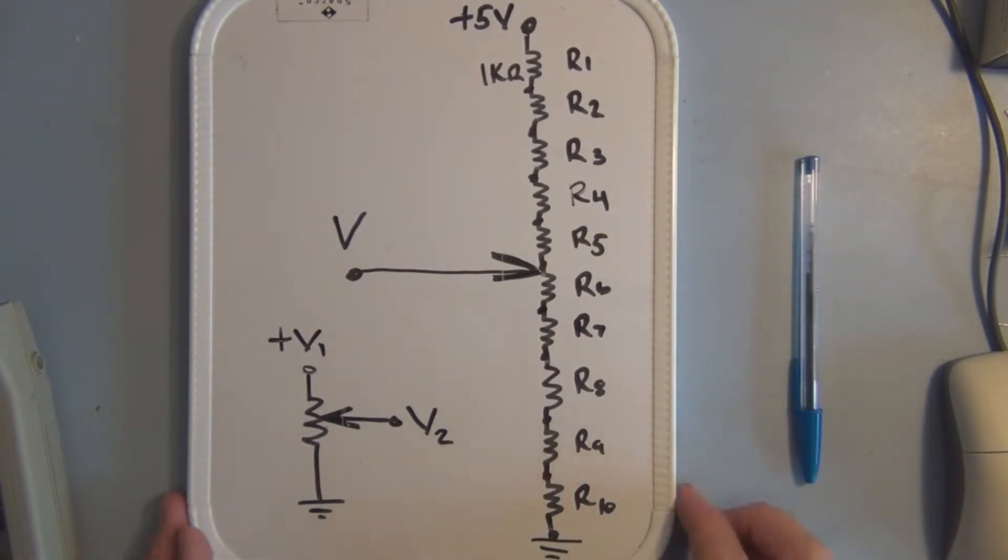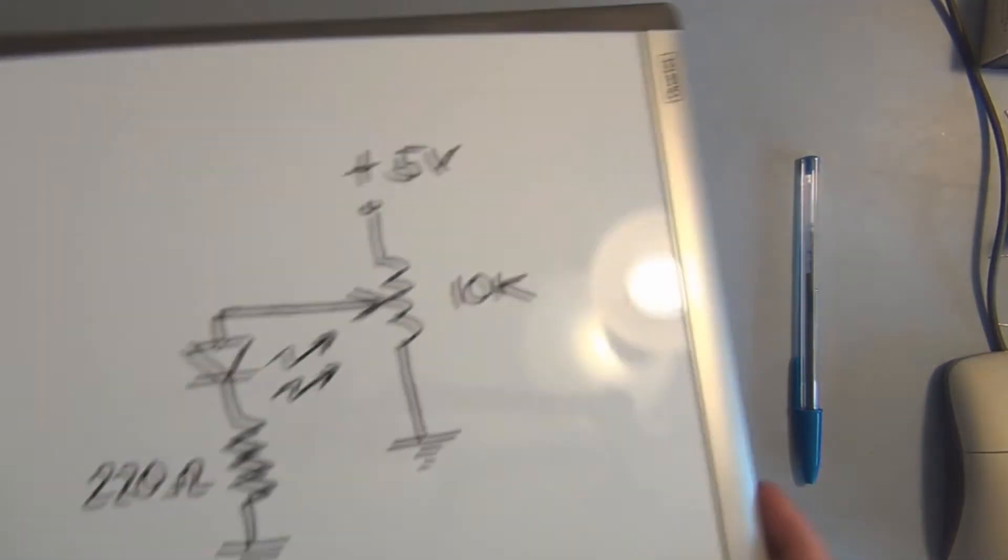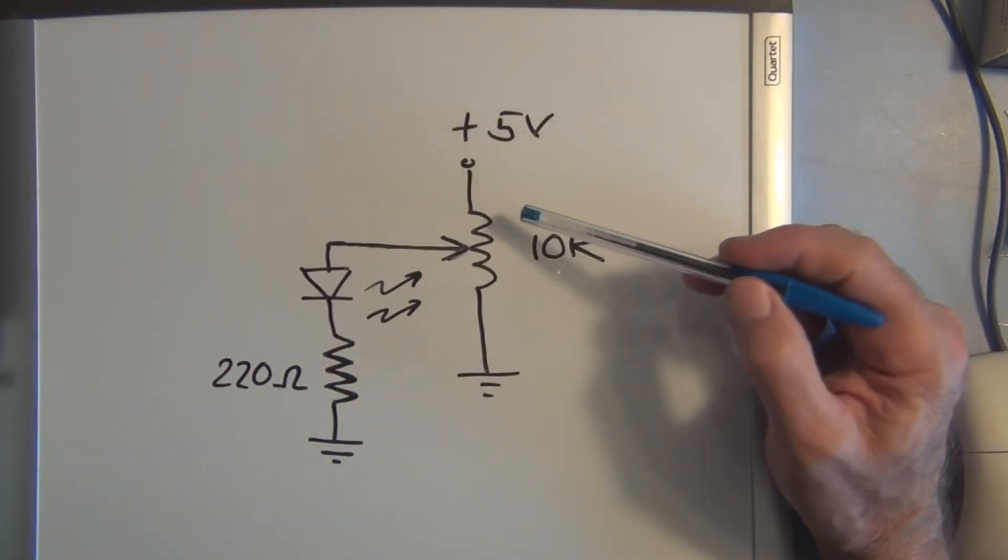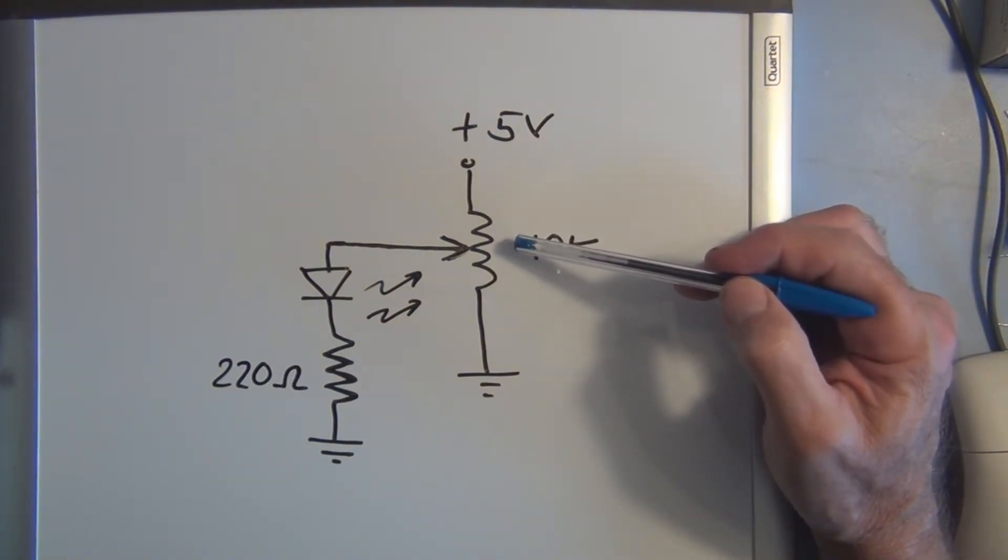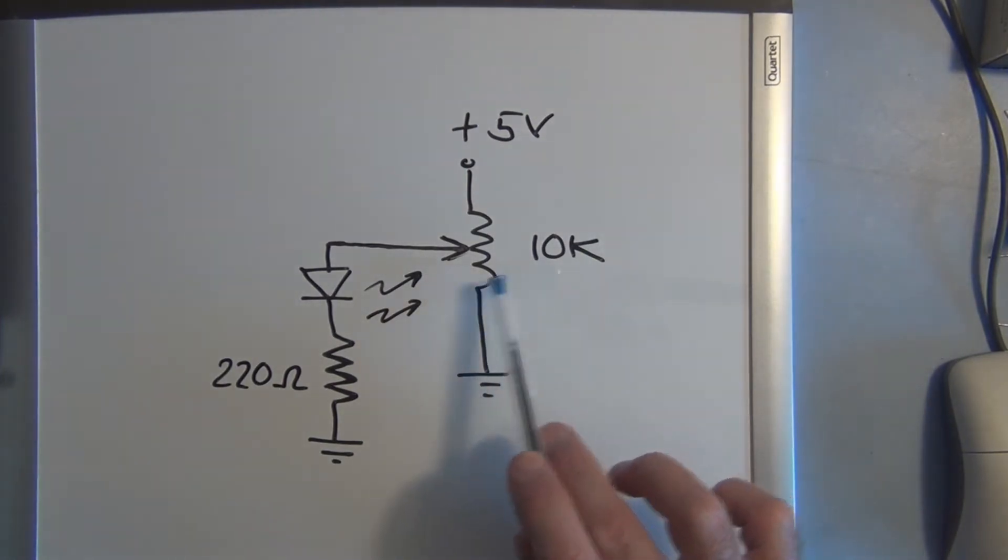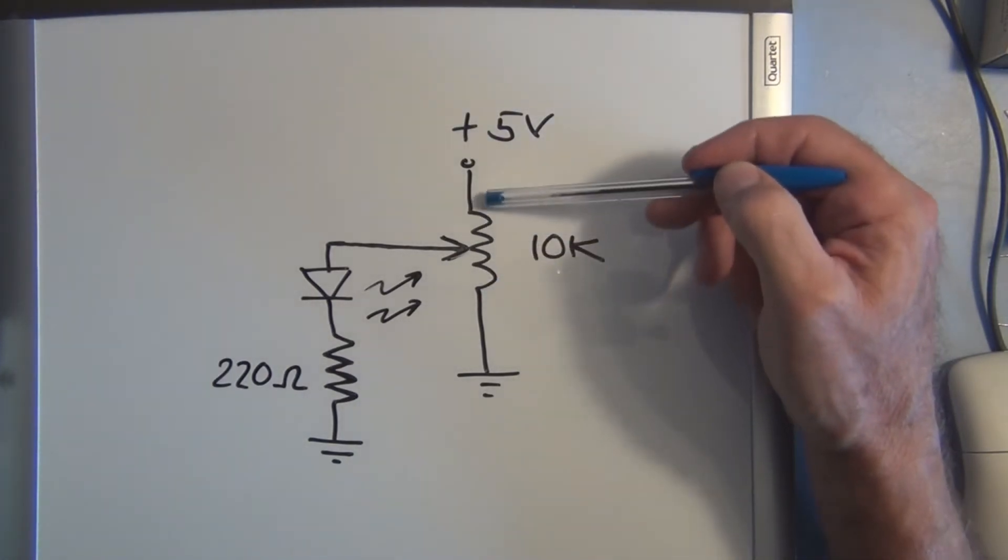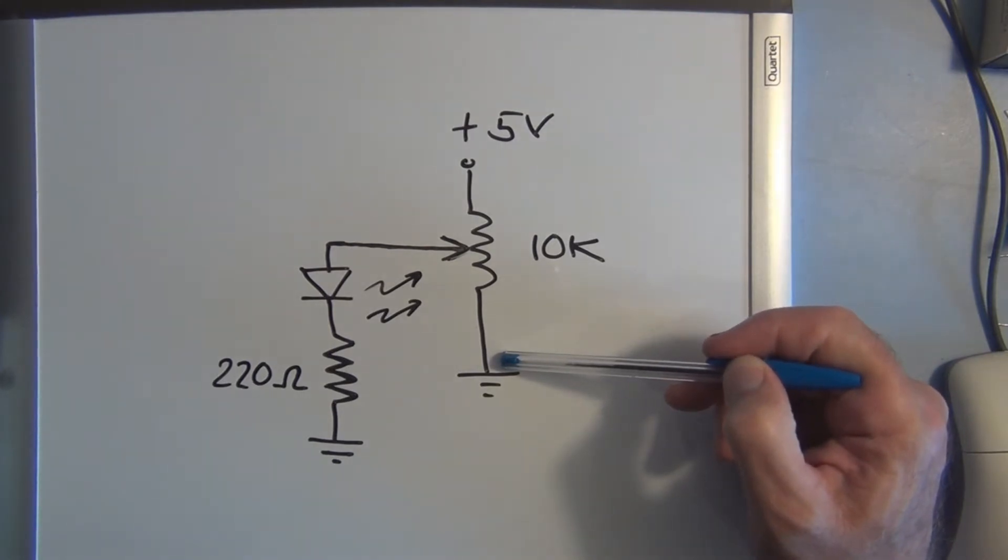Now let's take a look at the schematic with a potentiometer connected to the LED. So with the potentiometer, instead of the individual 1K resistors, we have the 10K potentiometer, and this center arm here wipes across this resistive material, giving us a maximum of 5 volts, or whatever our maximum supply voltage is, all the way down to 0 or ground.